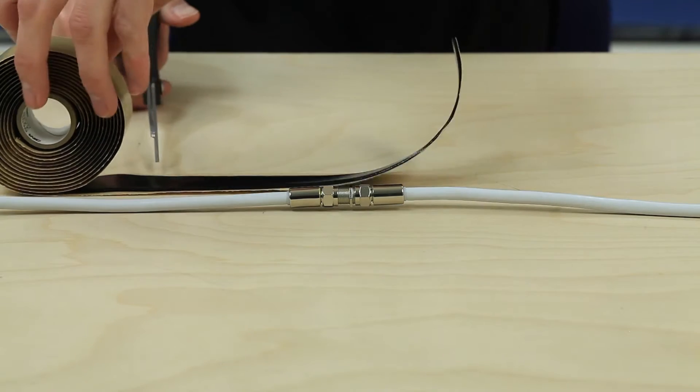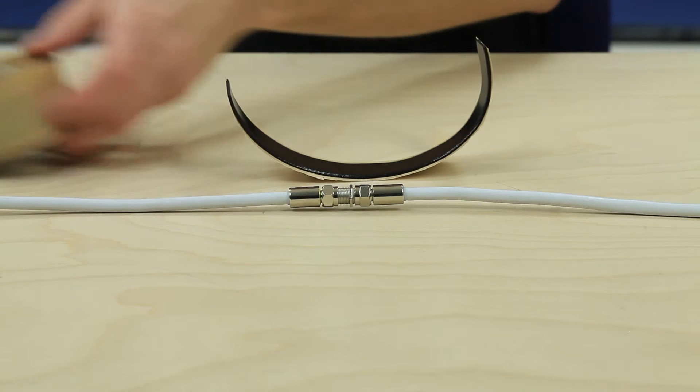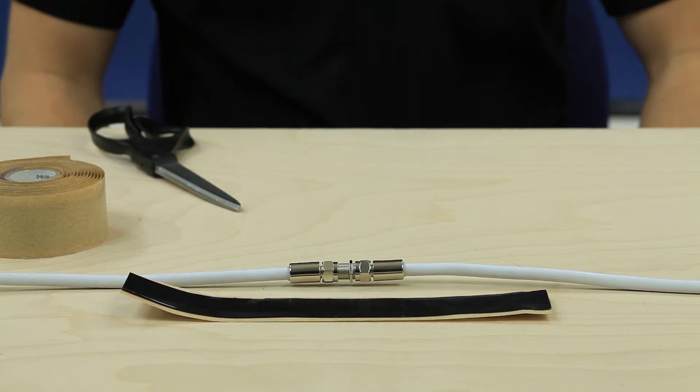Cut a strip of moisture sealing tape long enough to cover the connection, from about an inch below the connection to an inch above. Normally you'll need about 12 inches of tape to do the job.